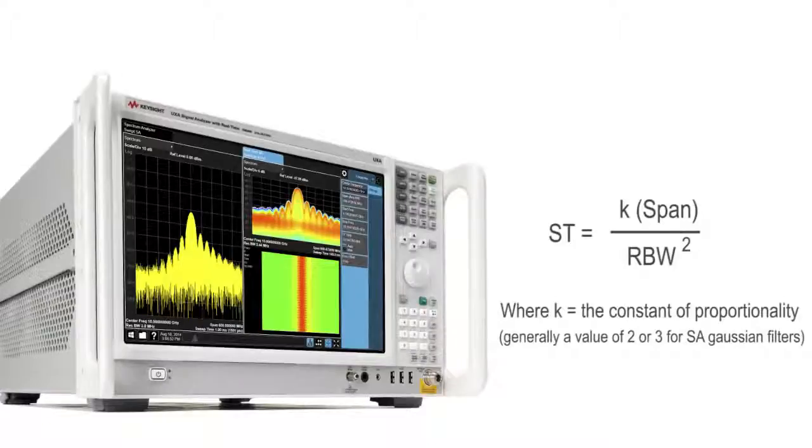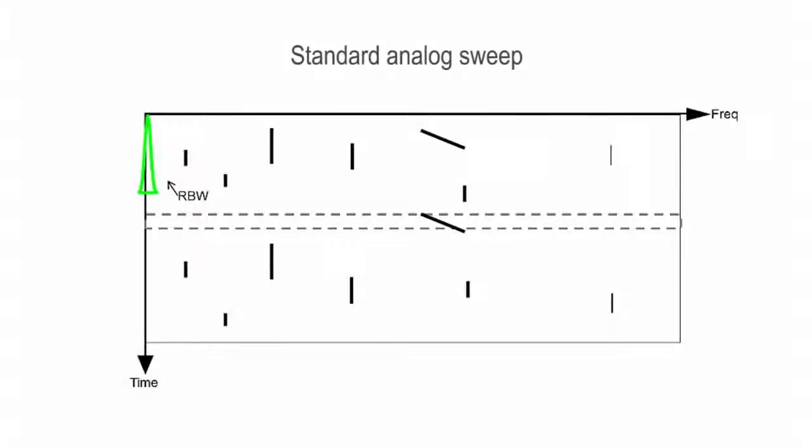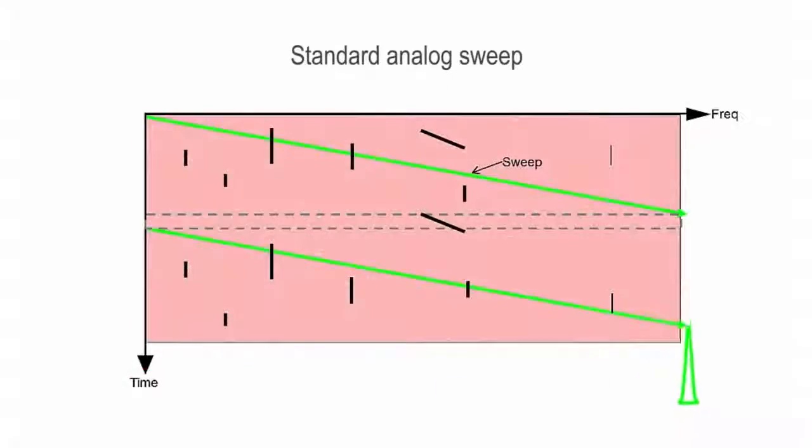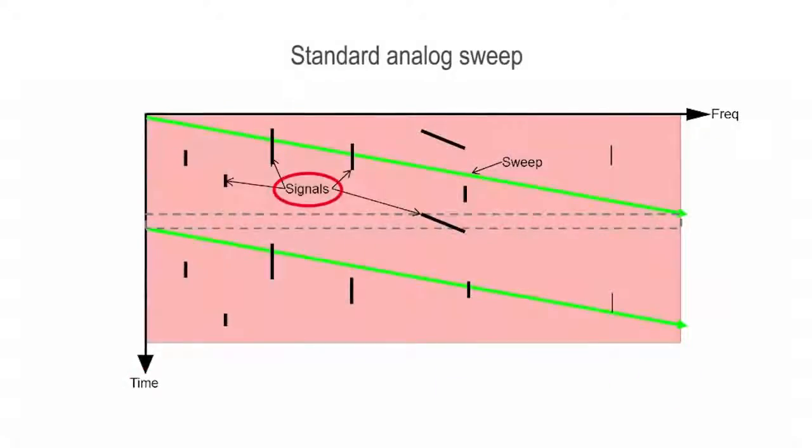In general, analyzers must adhere to the following equation for sweep speeds. Looking at the diagram, you can see how the resolution bandwidth is effectively swept through the spectrum. Time is on the y-axis and we are looking for how fast the sweep makes it through the spectrum. The black represents the signal in our environment, and if the sweep, which is in green, coincides with the signal, then it appears on the screen. Otherwise, it's missed and does not appear.